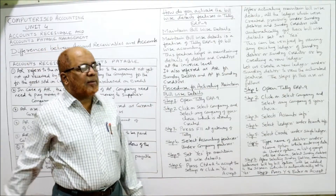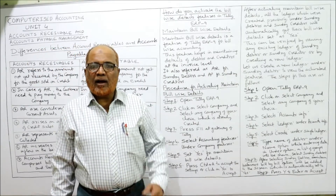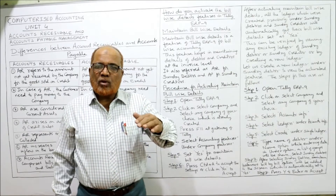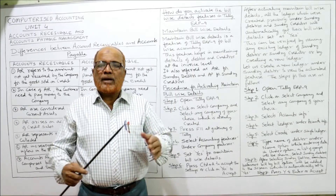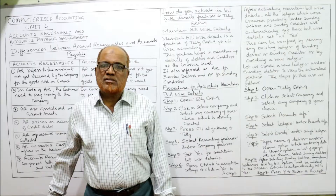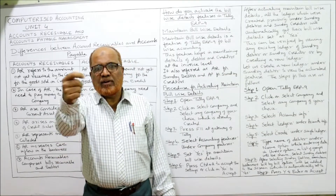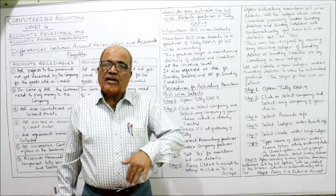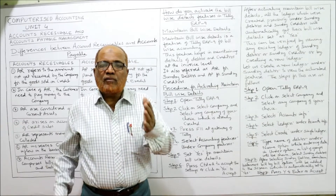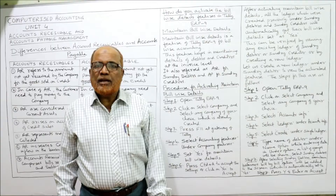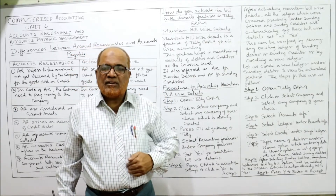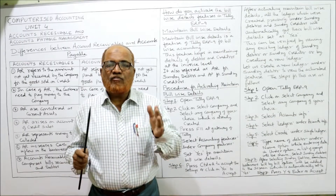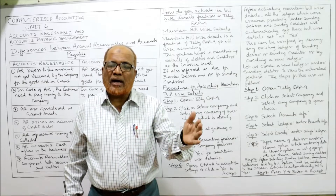Maintain bill-wise details is a feature of Tally ERP-9 for bill-wise accounting according to bills raised — invoices. There are two types: sales invoices and purchase invoices. When a company sells goods it raises an invoice; the original goes to the customer, a duplicate is kept by the company. Every invoice has a number to differentiate how much each sale was. Similarly, for purchases, the invoice is received from the supplier.